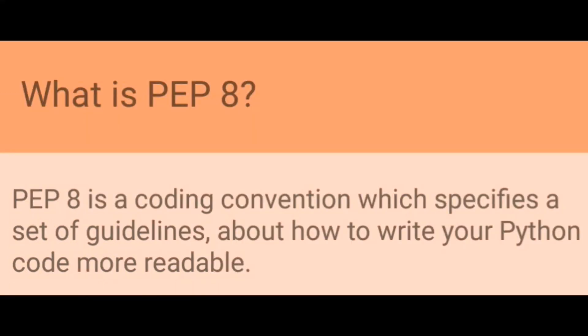What is PEP 8? PEP 8 is a coding convention which specifies a set of guidelines about how to write your Python code more readable.